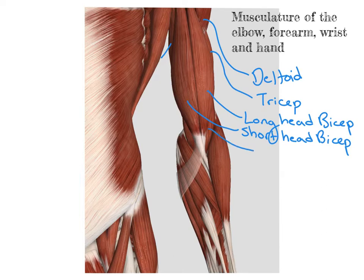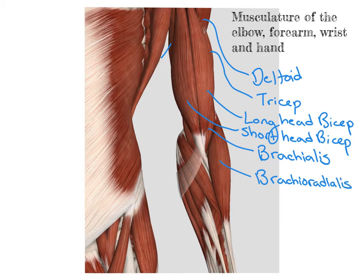Deep to the bicep, we have our brachialis. And distal to that in the forearm, we have our brachioradialis, which is the most superficial muscle on the radial side, as well as our flexor mass. Our flexor mass attaches to the medial epicondyle of the humerus and runs down into the forearm.